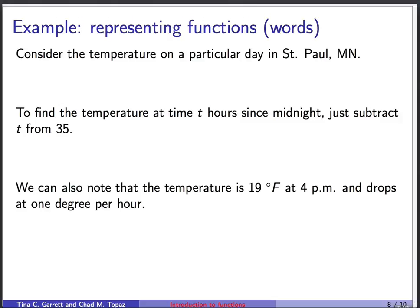We can describe our function in words. And there's a few different ways to do this. We could say, to find the temperature at t hours since midnight, just subtract t from 35. Or we could say, the temperature is 19 degrees Fahrenheit at 4 PM and drops at 1 degree per hour. And for that, we have to do a little extra step of math to get from this verbal description here to this one up here. But words are a perfectly fine way to represent a function.